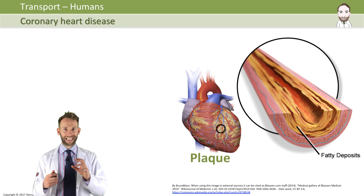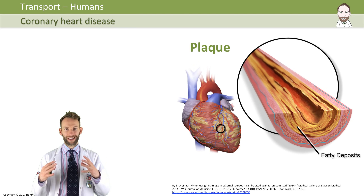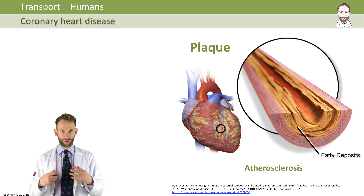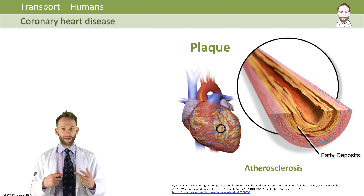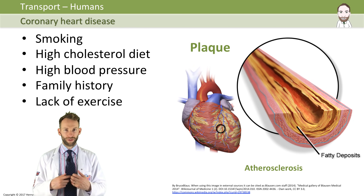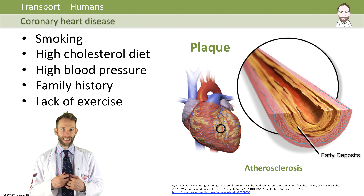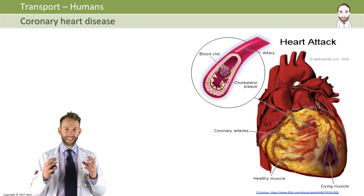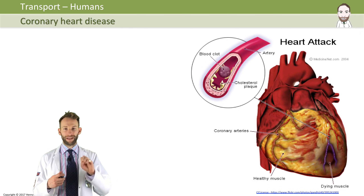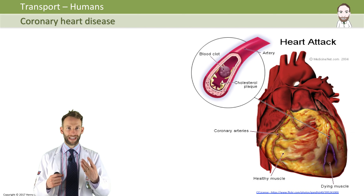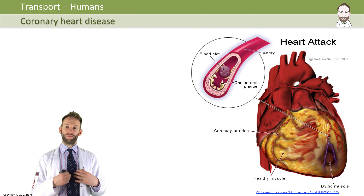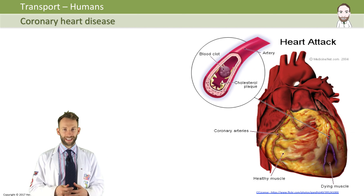Something that can go wrong with the heart is coronary heart disease. This is when a fatty substance called plaque builds up inside the coronary arteries — the arteries that supply the heart itself. This process of plaque building up in the arteries is called atherosclerosis, and there are lots of things that cause it: smoking, high cholesterol in your diet, high blood pressure, family history, and lack of exercise. It's what we call a multifactorial disease. If it gets really bad and the plaque builds up significantly, it might block blood flow. A piece of plaque might break off, causing a blood clot that could completely block the artery — and that is what gives you a heart attack. How high up in the artery the blockage is will affect how serious the heart attack is.